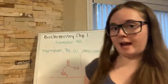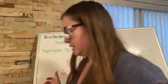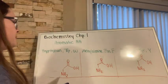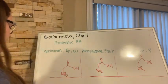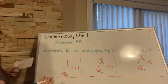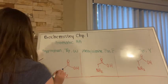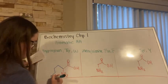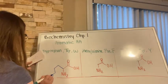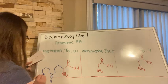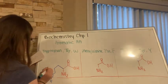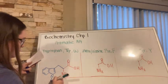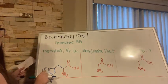For our next group of amino acids, we have our aromatic amino acids. The first one is tryptophan, which is the amino acid with the largest side chain. Tryptophan is aromatic due to its aromatic ring. Its three-letter abbreviation is T-R-P and its one-letter abbreviation is W — a weird one to remember. A helpful mnemonic: if you win a trip, W for win, TRP for trip.